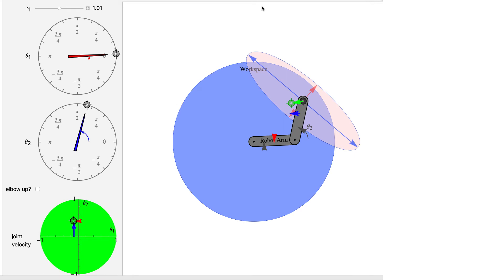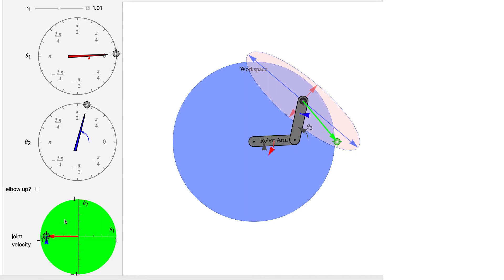One thing we'd really like to know is how the velocities of the joints — how fast each joint moves, shown by the length of these arrows — affects the velocity of the end effector, shown by the green arrow. As we move these inputs, how do we figure out how that translates to end effector velocity and its angular velocity?